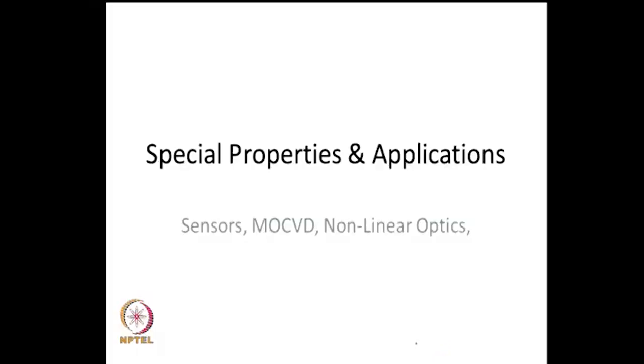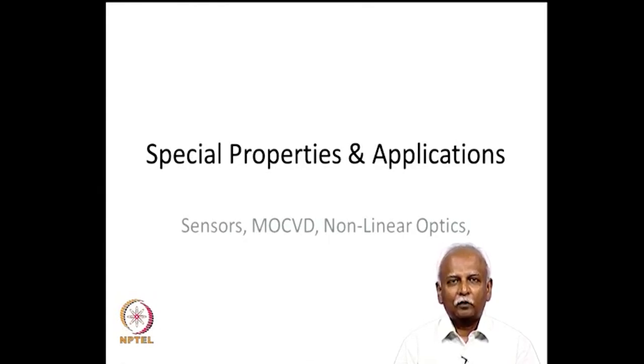Organometallic chemistry is extensively used in catalysis for the synthesis of small molecules, for large molecules like polymers, and in day-to-day laboratory applications. However, one always wonders whether it can be used for other purposes. This question is answered in today's lecture. We will talk about some special properties and applications, considering a few topics like sensors, metal organic chemical vapour deposition, and non-linear optics.